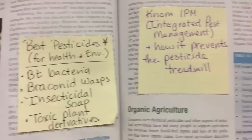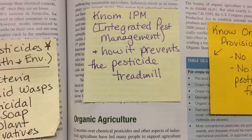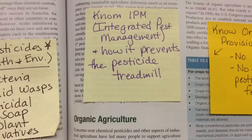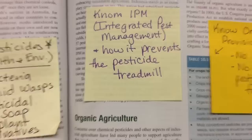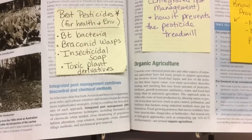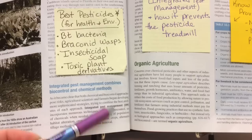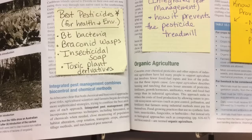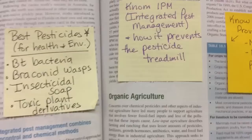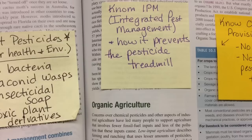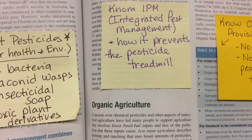One way farmers can control pests instead of massive pesticide spraying is integrated pest management (IPM). IPM is described at the bottom of page 256 and involves multiple methods: habitat alteration, crop rotation, transgenic crops, targeted pesticide application, and mechanical pest removal — sometimes by hand. When you use many different methods to prevent pests, you also prevent the pesticide treadmill, which is a really good outcome.